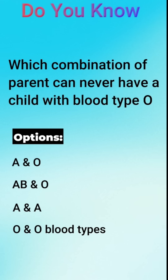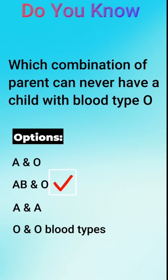The correct answer is B, AB and O blood types. Parents with blood types AB and O cannot have a child with type O blood, as the AB parent will always pass either A or B antigens.